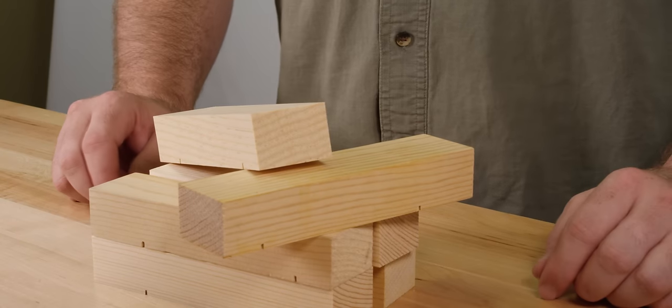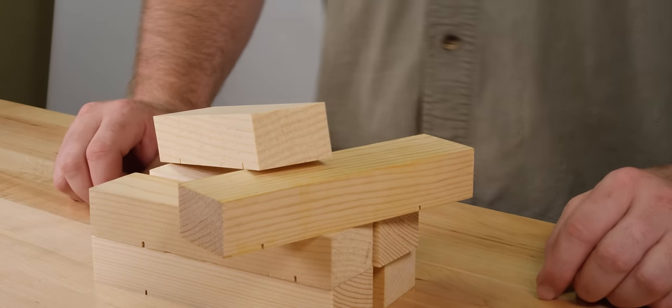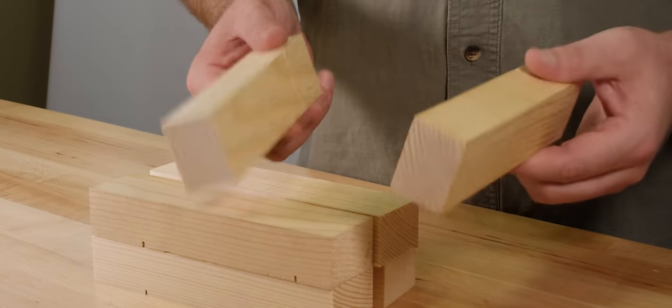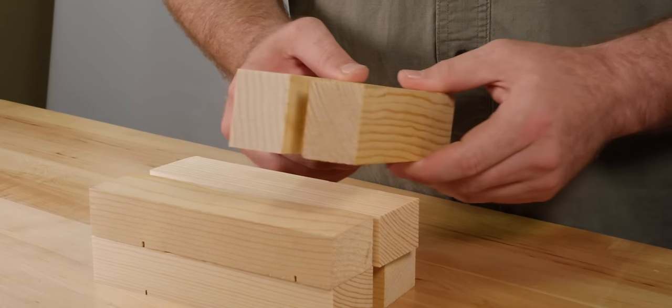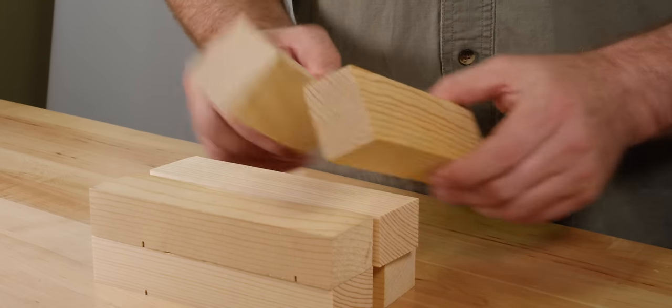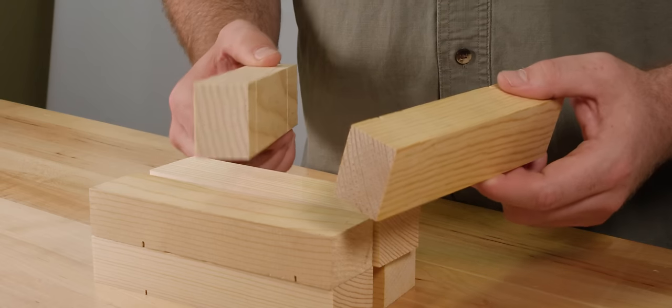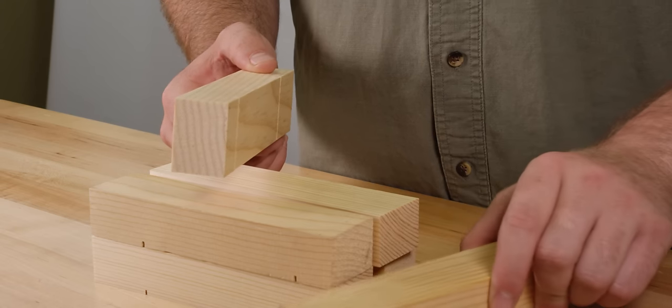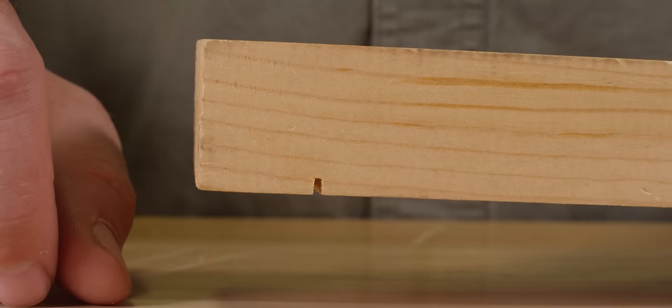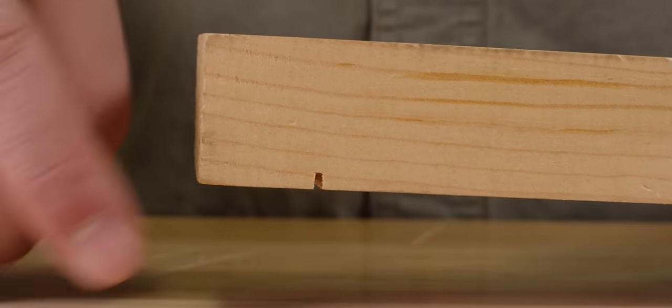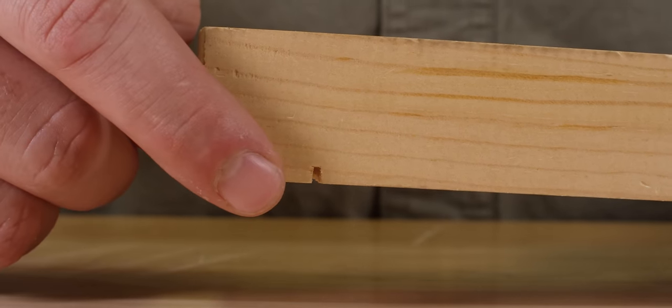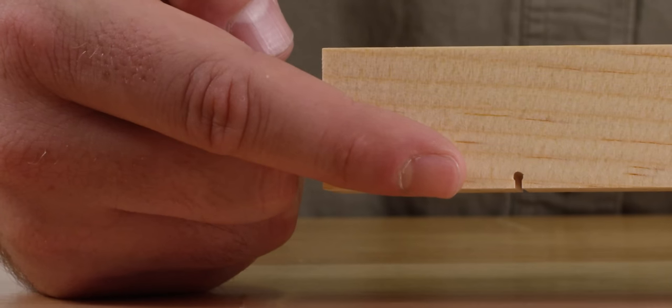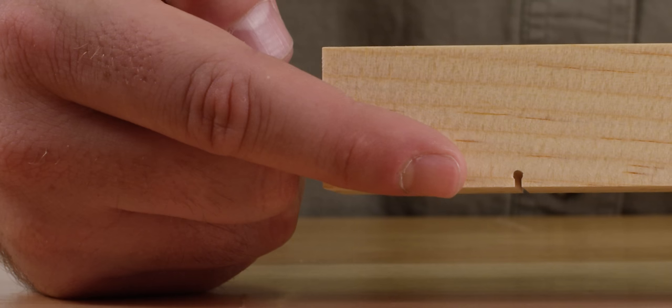First, Pinewood Derby car blocks are mass produced by the millions. When you produce millions of anything, slight variations creep into the production line. One variation is that the axle slots are not always perfectly straight or square. If the axle slot is not perfectly straight, your axles will be crooked. If your axles are crooked, your car will not steer straight. If your car doesn't steer straight, it will ricochet off the track rails causing it to lose speed. The second reason to drill the axle slots is that the axle slot is square and your axles are round, making it difficult to insert a round peg in a square hole. A drilled axle slot will give you a nice straight round hole for your straight round axles, making it easy to push them in with your fingers.